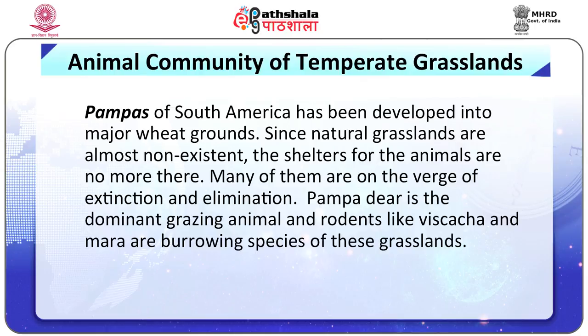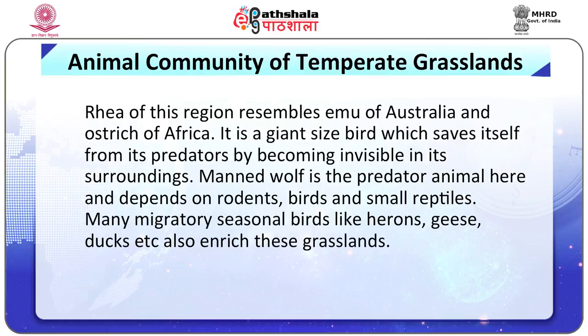The pampas of South America have been converted into major wheat grounds and natural grasslands are almost non-existent, so animal shelters are gone and many species are on the verge of extinction. The pampa deer is the dominant grazing animal, and rodents like viscacha and mara are burrowing species. The rhea resembles the emu of Australia and ostrich of Africa – a giant bird that saves itself by becoming invisible in surroundings. The maned wolf is the predator, depending on rodents, birds and small reptiles, and many migratory seasonal birds like herons, geese and ducks also enrich these grasslands.